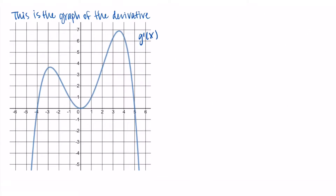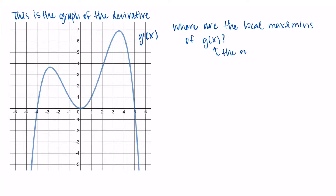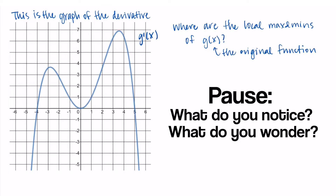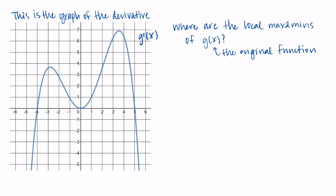The next set of questions is where are the locations of the local maximums and minimums on the original function g of x? Pause the video and think about what might be the answer — how might you find this given the graph of the derivative? What's important to remember is that the graph we are given is the graph of the derivative. It might be tempting to point to the peaks and valleys and call those the local maximums and minimums, but we want the local extrema of the original function g, not of the derivative graph.